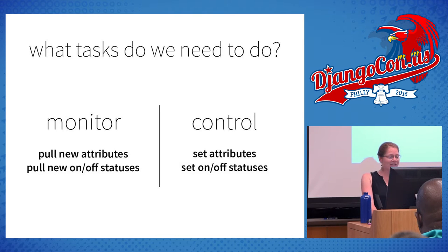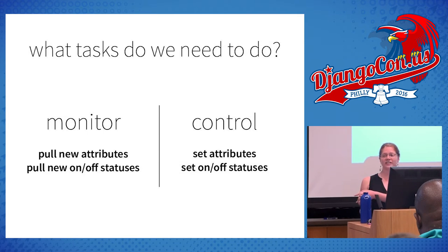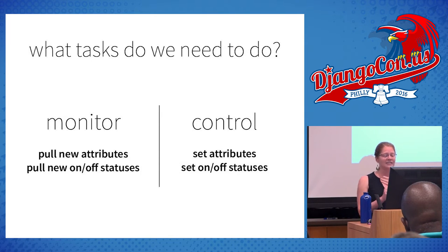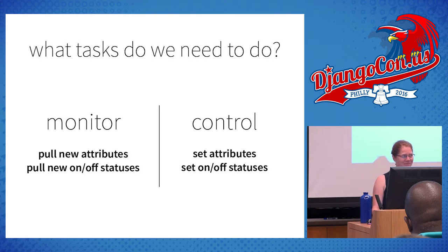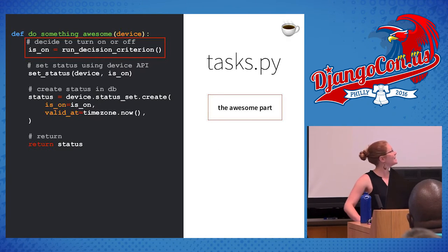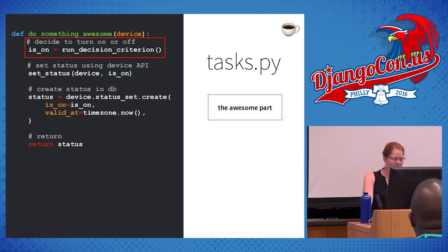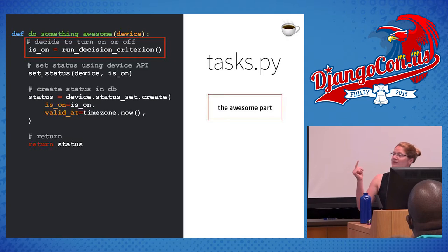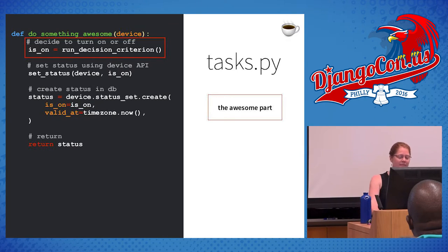The two basic kinds of functionality for an IoT application are monitoring — getting the state of the device — and control — changing the state of the device. For each kind of observation you have, you might want a separate task function to get the data and to set it, if the vendor lets you modify it. Some APIs don't let you modify as many attributes as you might want, so check that before getting your heart set on specific applications. You'll also need a driver task — let's call it the do-something-awesome task — that stitches all of this together. For this demo app, we pass in a device, decide based on some external data whether to turn it on or off, pass that message to the device via its API, and save the new status to the database.